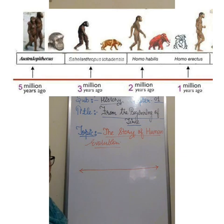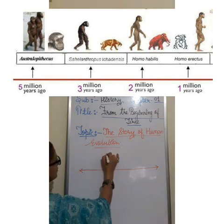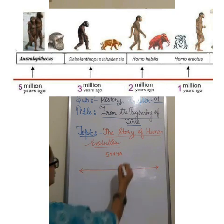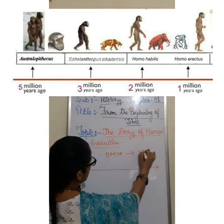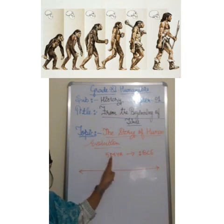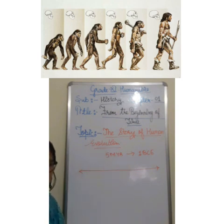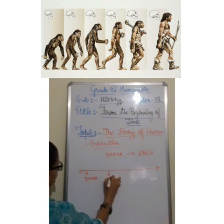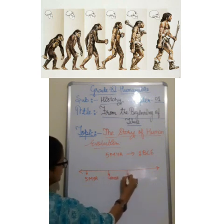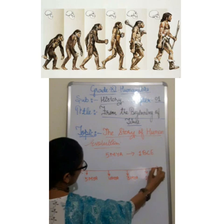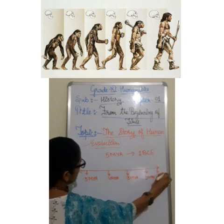This is very important in history to make a time zone. So it starts basically in this first chapter. Your time zone is starting from 5 million years ago. MYA means million years ago, to 1 BCE. BCE means Before Common Era, and MYA means million years ago. So this time period we are going to see — how the story of human evolution arose. Now we can draw it like this: 5 million years, 4 million years, then 3 million years, then 2 million years ago, and then 1 BCE — Before Common Era.